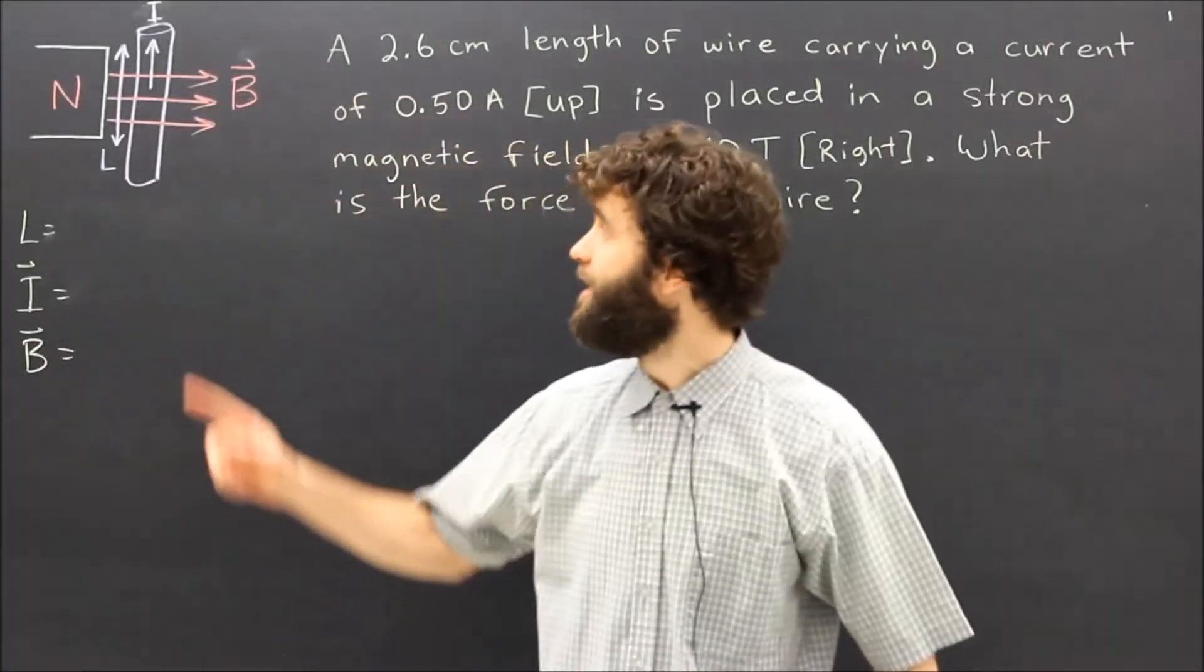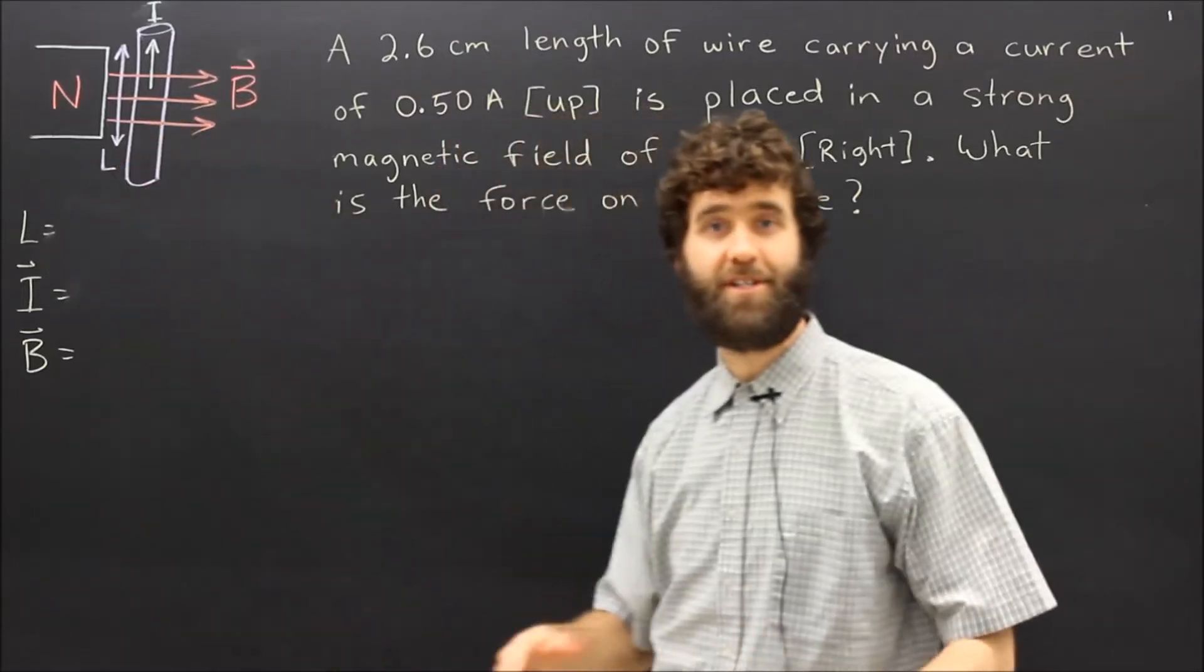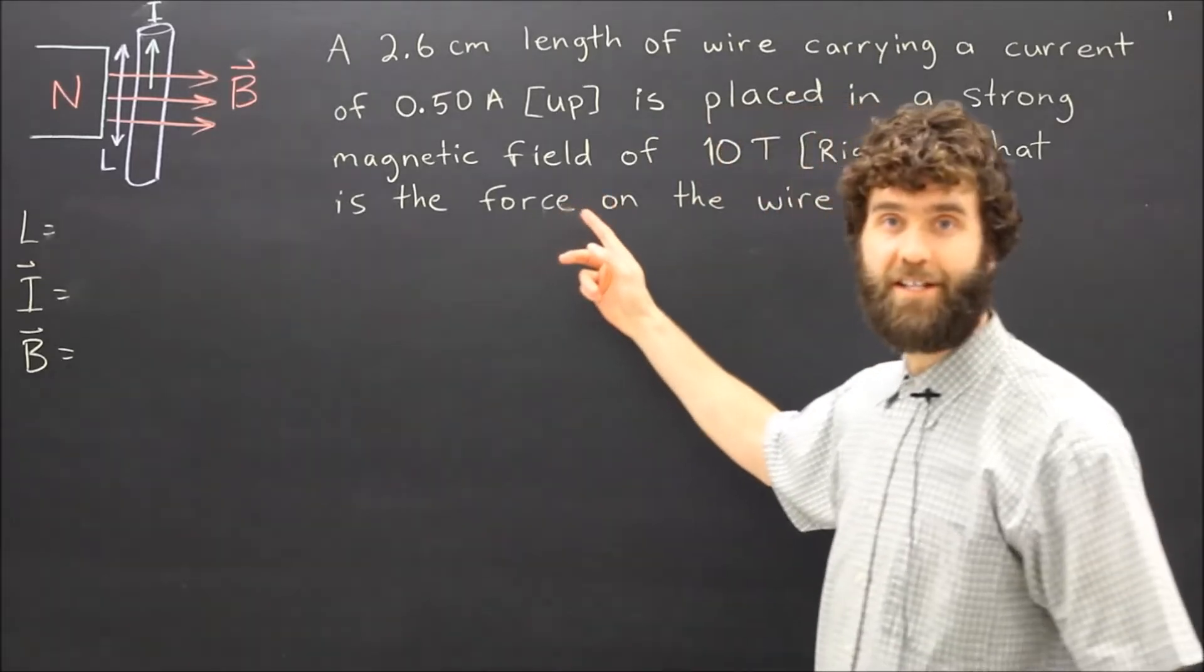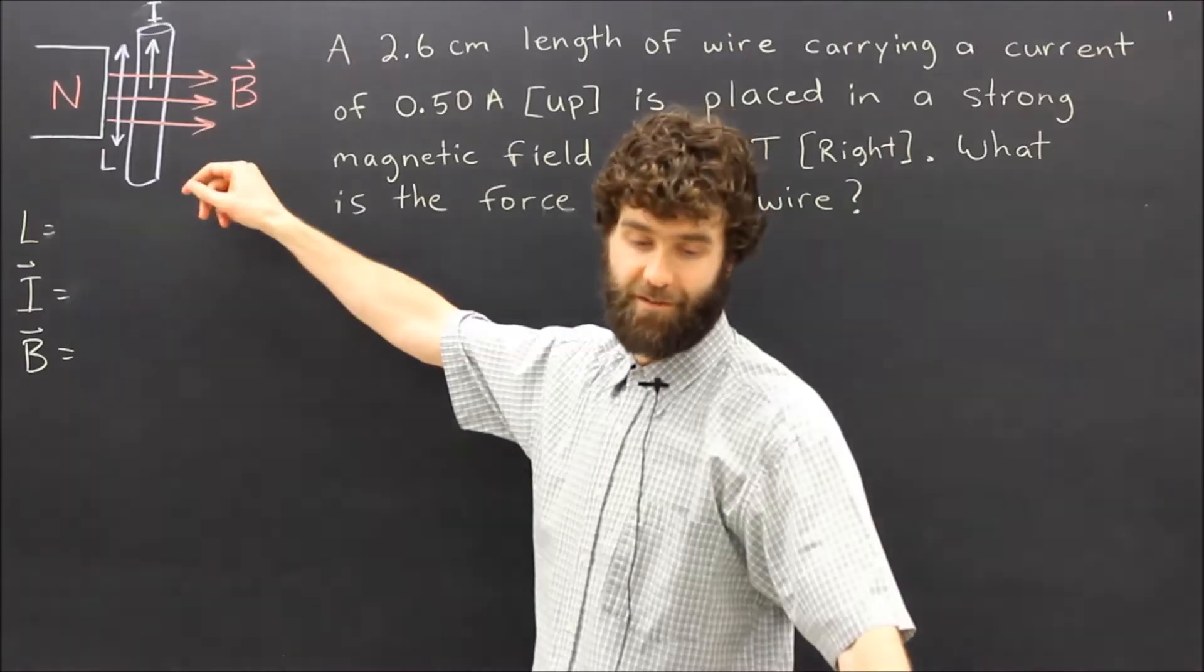As you know, when electricity flows through a wire near a magnet, the wire experiences a force and gets pushed. Today we're going to do a calculation to determine what the strength of that force would be on this wire in this field.